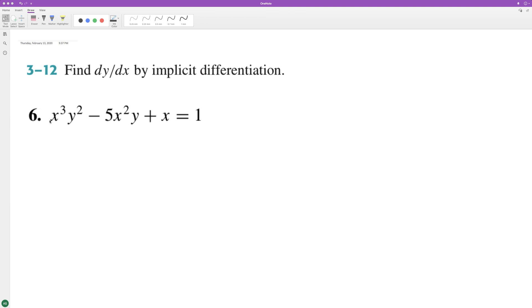Let's go ahead and find the derivative here. So using the product rule for each component with an x and the y, for the first part we're gonna get 3x squared y squared plus x cubed times 2y dy dx.